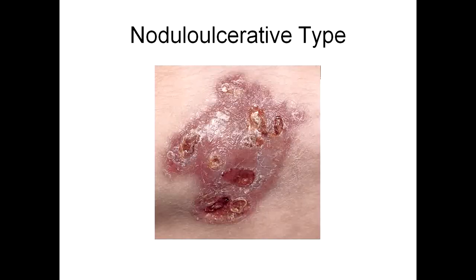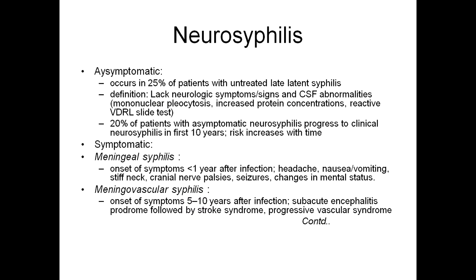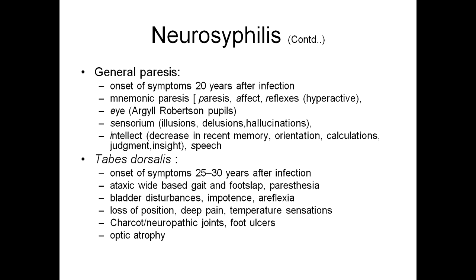Neurosyphilis — asymptomatic: occurs in 25% of patients with untreated late latent syphilis, defined by lack of neurological symptoms, signs, and CSF abnormalities. 20% of patients with asymptomatic neurosyphilis progress to clinical neurosyphilis in the first 10 years, and risk increases with time. Symptomatic: either meningeal syphilis — onset of symptoms less than one year, with headache, nausea, vomiting, stiff neck, cranial nerve palsy, seizures, and change in mental status — or meningovascular syphilis — onset 5 to 10 years after infection, with subacute encephalitis prodrome followed by stroke syndrome or progressive vascular syndrome.